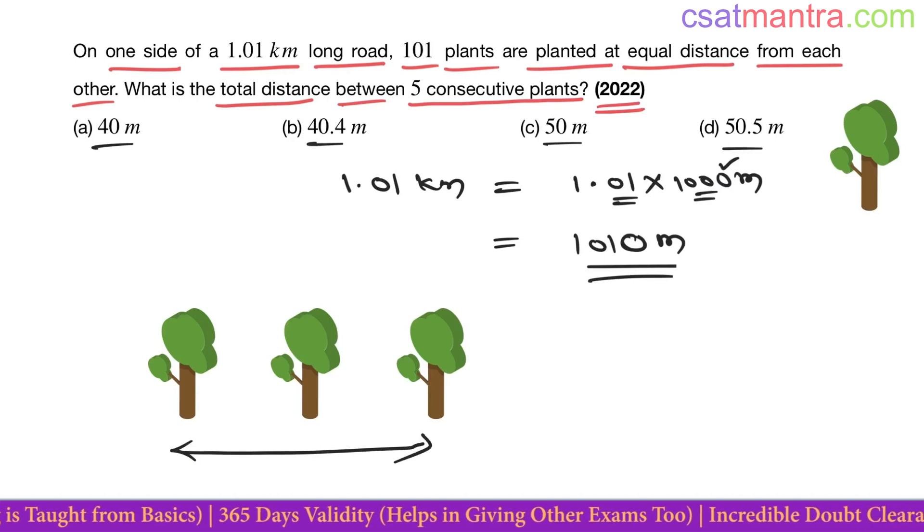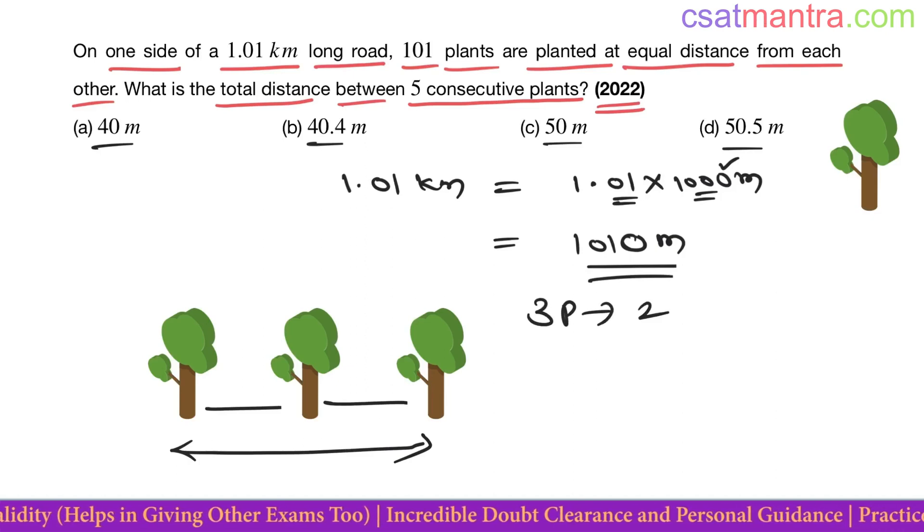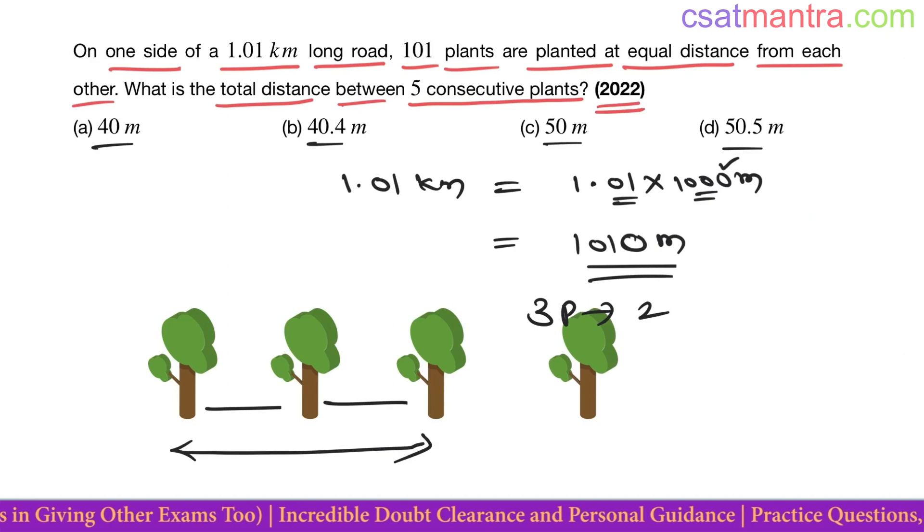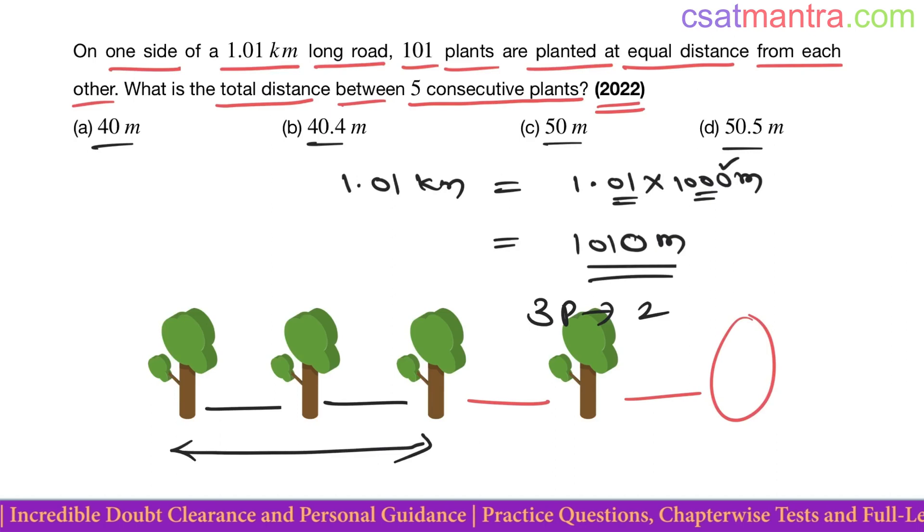What about four plants? Four plants need three parts. Fifth plant - for five plants you need four parts. 101 plants? 100 parts you need. See, two plants need one part, three plants you divide the distance into two parts, four plants into three parts, five plants into four parts.